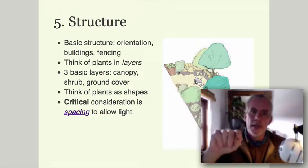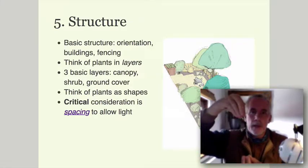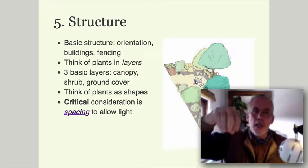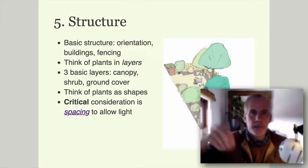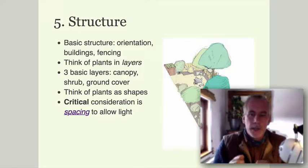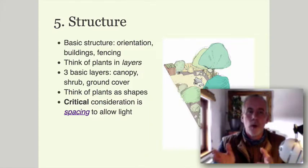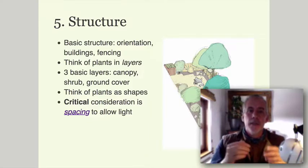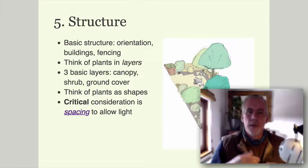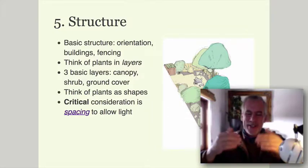Think of plants as shapes on your plan. In my CAD plan you can see a dark green Irish Yew — a very upright plant that doesn't cast much shadow despite being thick — and next to it a fig, which is pretty dense with big leaves. Consider what shape your plants are and how much space they will take up. The critical consideration — really the main reason you make a plan — is spacing: how much space each plant occupies.